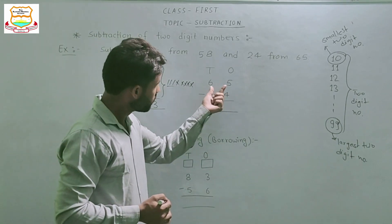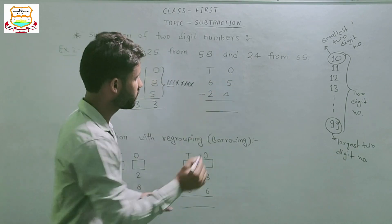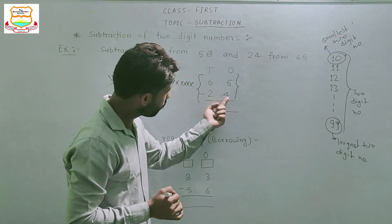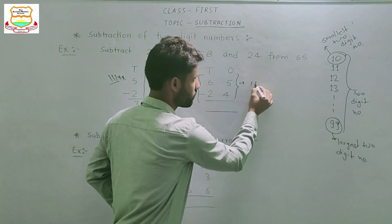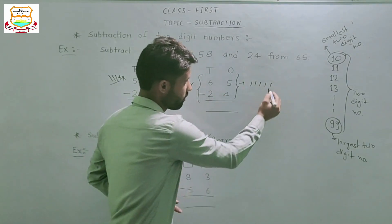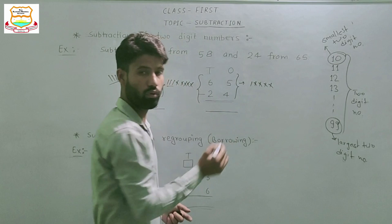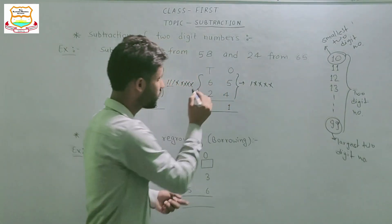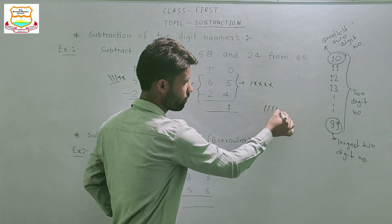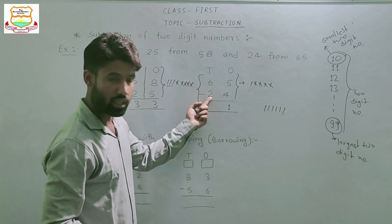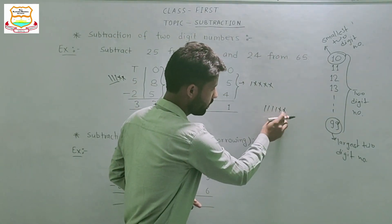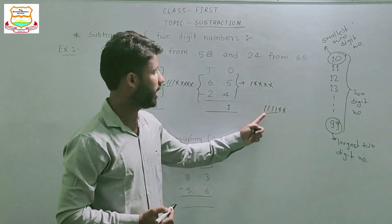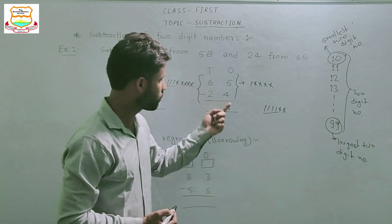Another example is 65 minus 24. Same process — subtract ones to ones and tens to tens. Subtract 4 from 5: put 5 sticks and cut 4 — 1, 2, 3 and 4. How many left? 1. Means 5 minus 4 equals 1. Now the tens column: 6 sticks, subtract 2 — cut 1 and 2. Count remaining: 1, 2, 3 and 4. Means 6 minus 2 equals 4.